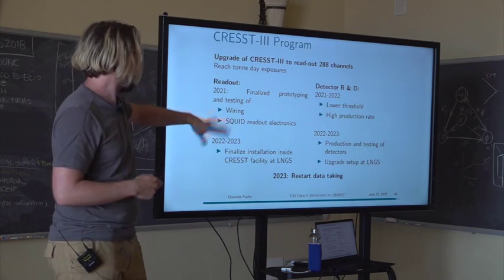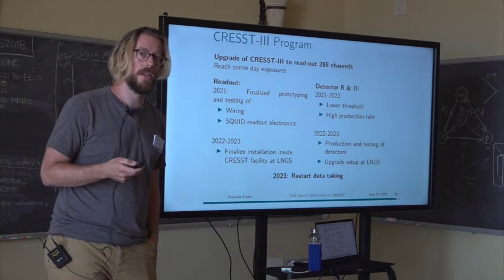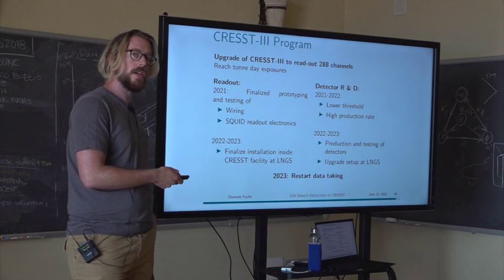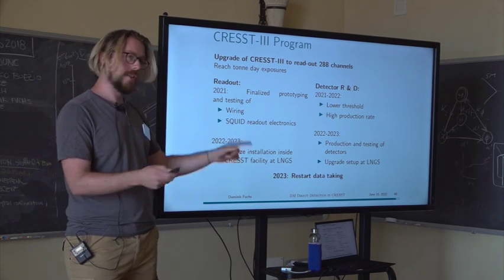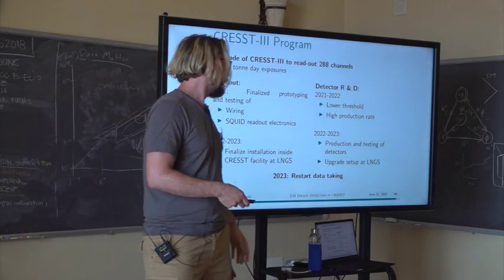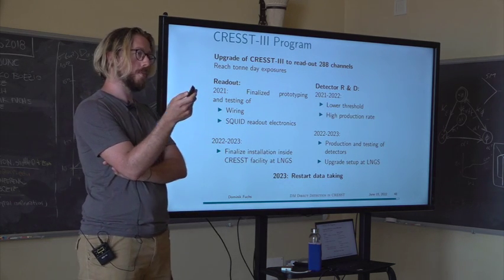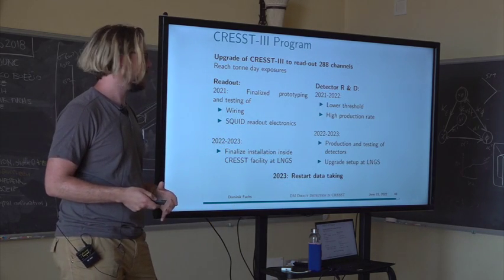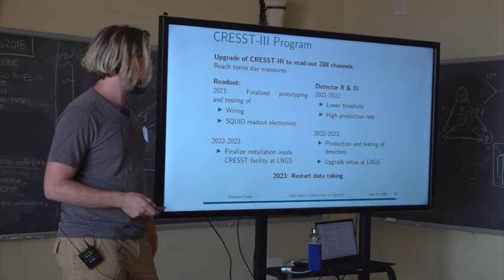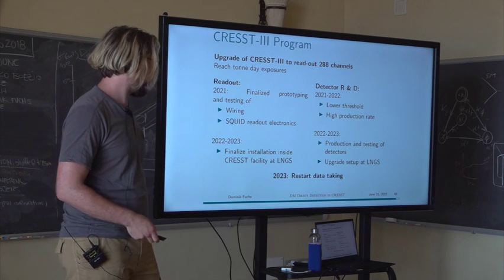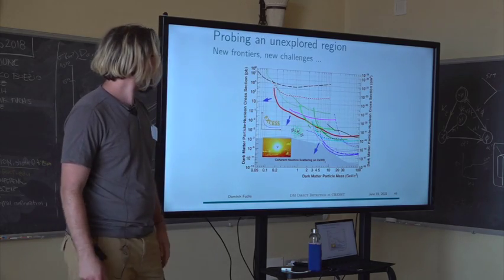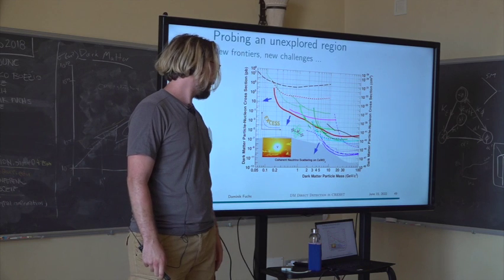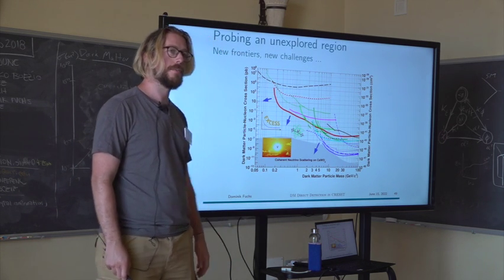The plan for CRESST is to upgrade to 288 readout channels, reaching ton-day exposures. Last year we finalized prototyping and testing of the wiring of the SQUIDs. The plan is to install everything at LNGS by end of this year and next year. At the same time we've been doing a lot of detector R&D to push thresholds even lower while maintaining a high production rate for scaling up the channel count. The goal is to start data taking with this upgraded setup next year and push into this interesting regime — hopefully resolving the excess, maybe finding dark matter, and eventually with high enough exposure touching the neutrino floor.